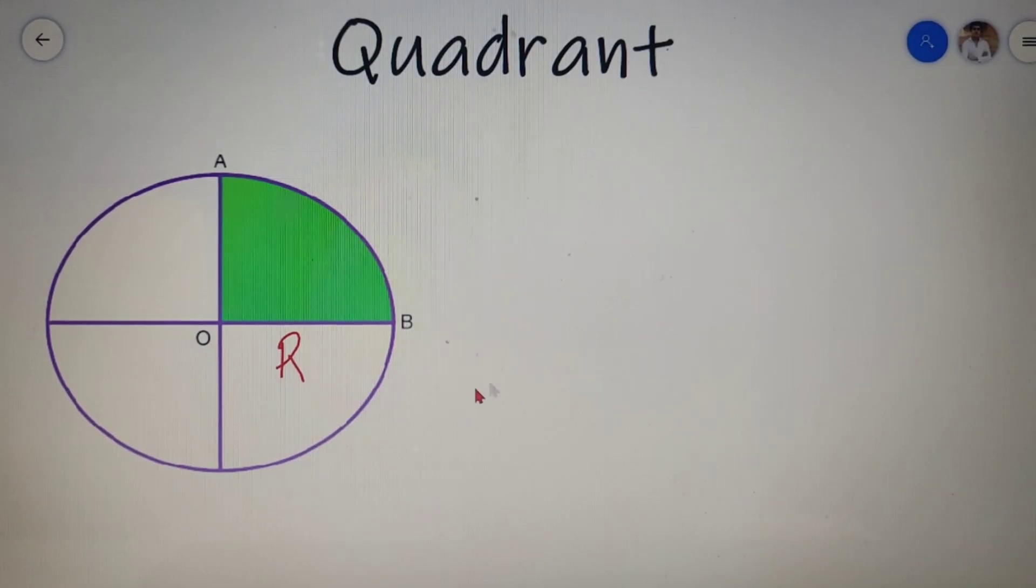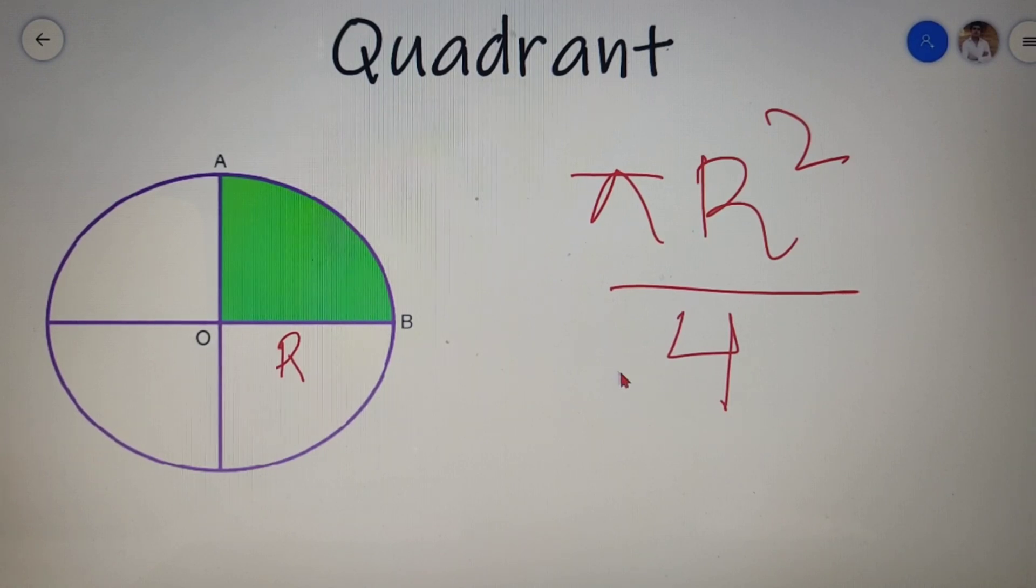Now moving on to the area of a quadrant, we know that the area of a circle is equal to πr², and a quadrant is one-fourth of a circle. So the area will also be one-fourth of that of the circle. So the area of a quadrant is equal to πr² divided by 4.